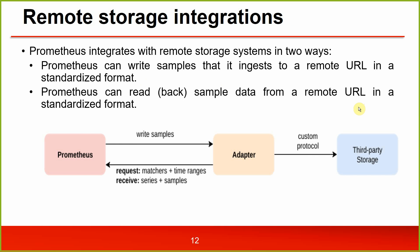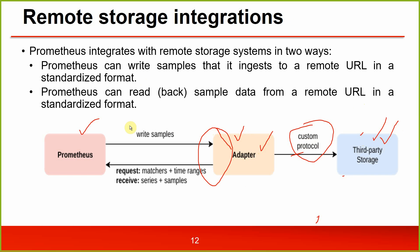Remote storage integrations: you can use adapters to store data persistently on a remote location such as a third-party S3 bucket or object storage, using a custom protocol between the adapter and the third party. The adapter will be the endpoint for Prometheus — Prometheus writes samples to the adapter and reads samples from the adapter. Prometheus out of the box does not support remote storage natively and integrates in two ways: writing samples to a remote URL and reading block sample data from a remote URL, both in a standardized format provided by an adapter.